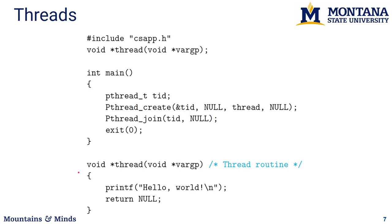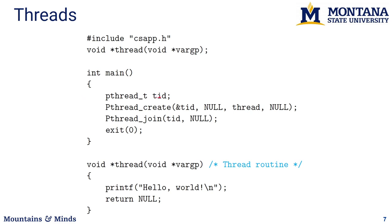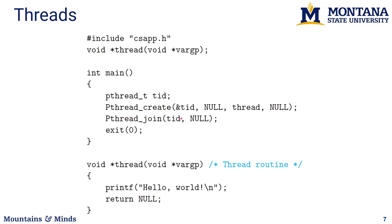To start threads in C, you define a thread function that takes some variables and returns a void pointer. All the thread does is print stuff and return. In your main function, you set up a thread object and call pthread_create with a pointer to that object and other parameters, specifically the name of the function you want to run and any parameters for it. Calling this starts the thread. The main program can then wait for the thread to finish by calling pthread_join, which returns when the thread completes.